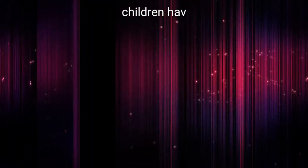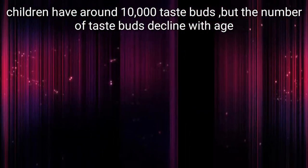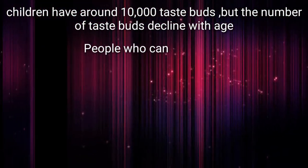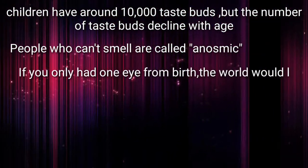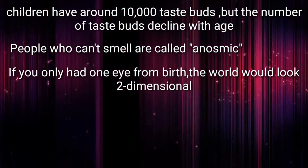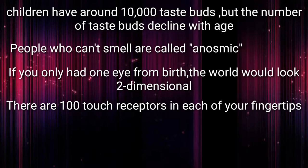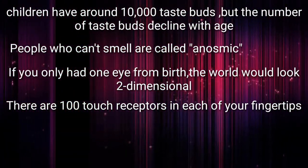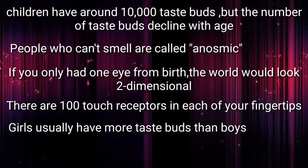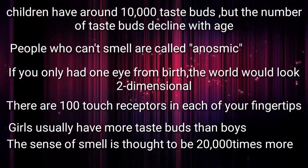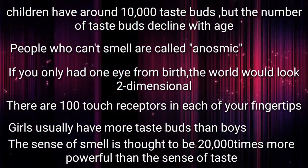Fast Facts: Children have around 10,000 taste buds but the number of taste buds declines with age. People who can't smell are called anosmic. If you only had one eye from birth, the world would look two-dimensional. There are 100 touch receptors in each of your fingertips. Girls usually have more taste buds than boys. The sense of smell is thought to be 20,000 times more powerful than the sense of taste.